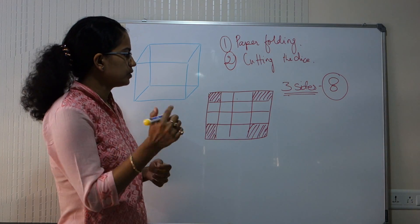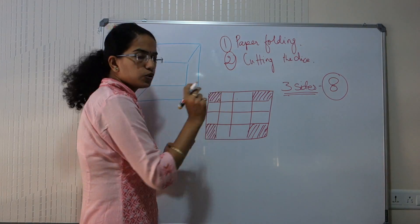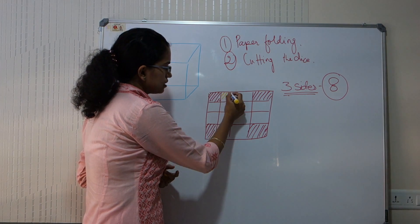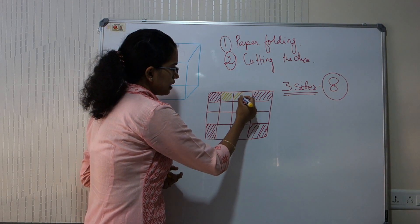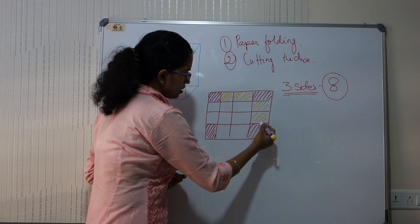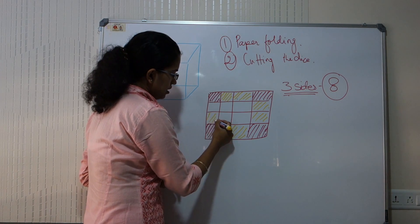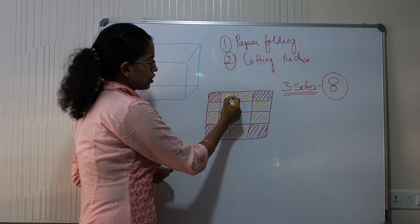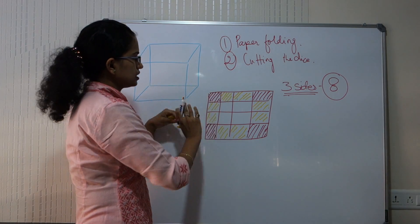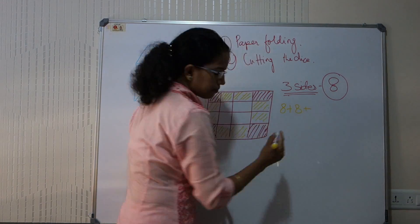Now let's look at the number of cubes with 2 colors painted — say yellow. On the front face you have 1, 2, 3, 4, 5, 6, 7, 8 yellow pieces, so 8 on the front face, and 8 on the back face.